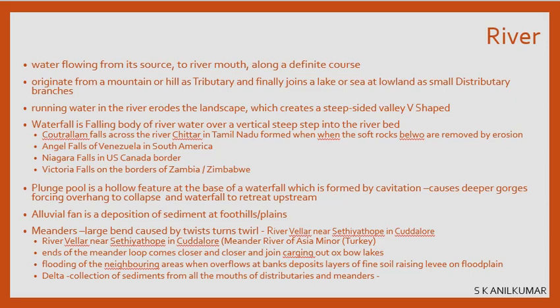A definite course does not mean the river stays the same for thousands of years — it may change course during floods or dry periods, but normally it has a predictable path. The source is the place where water starts accumulating to become a river. The river mouth is where the river meets a lake, sea, or ocean and deposits all its water. Rivers normally originate from a mountain or high land.